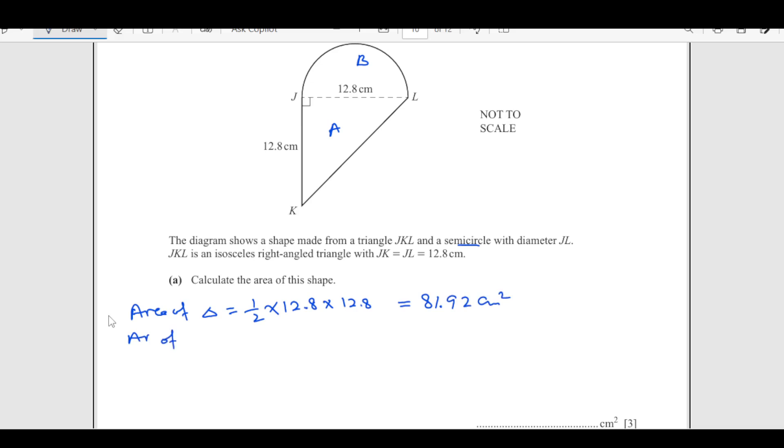Now area of semicircle means half of the circle that is half pi r squared. Half pi, r is radius is half of 12.8 divided by 2. This is 6.4. That is the radius. So 6.4 squared. Calculate this by plugging in the values. We got 64.33.